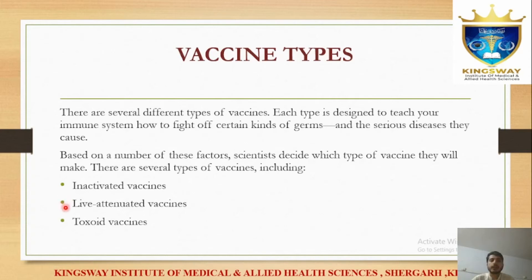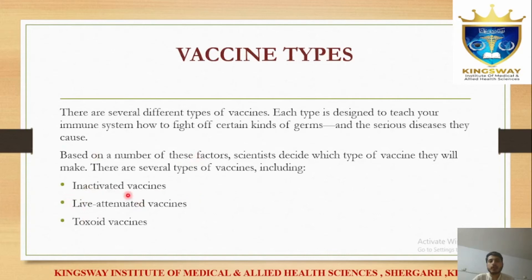In basic categories, vaccines are based on three types: inactivated, live attenuated, and toxoid vaccines. An inactivated vaccine uses a disease-causing bacteria or virus that has been killed — it is dead and inactivated, so it cannot cause the disease but still triggers immunity.